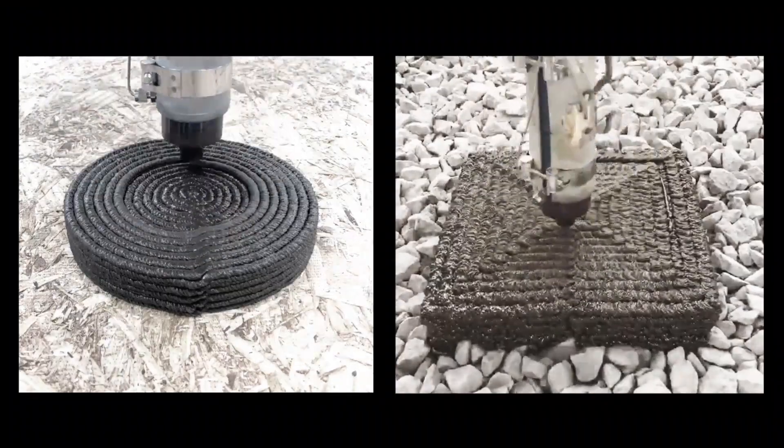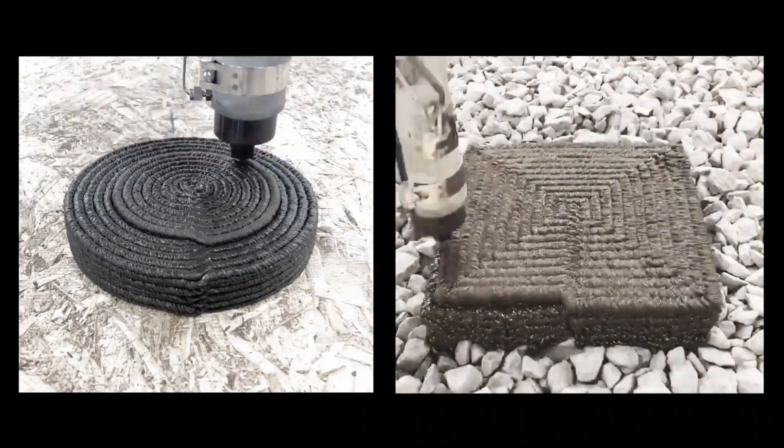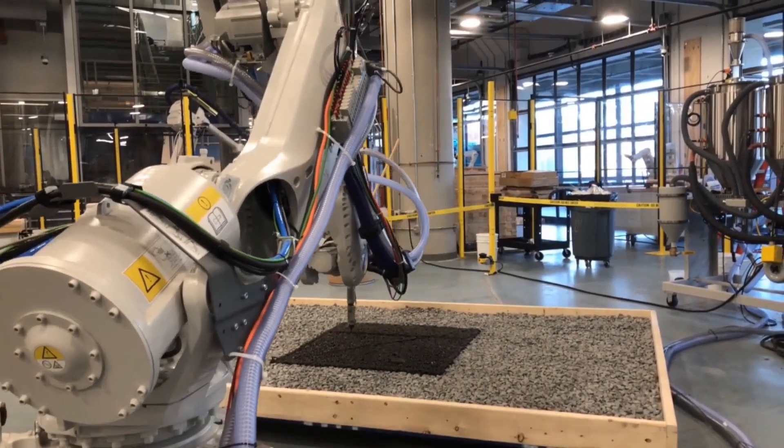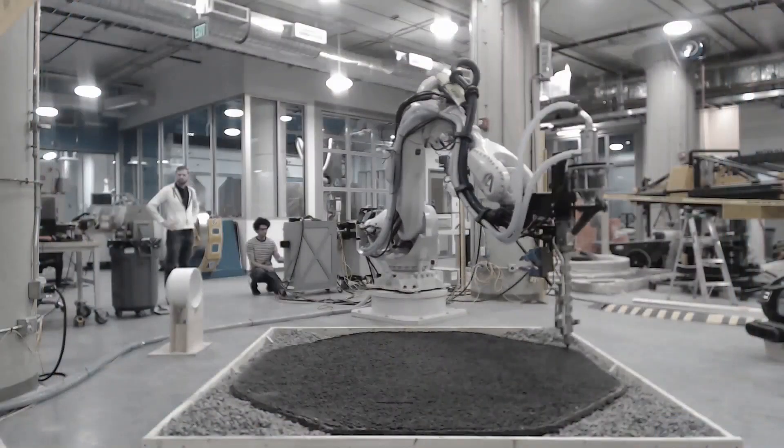In just five weeks, AI Space Factory progressed from isolated tests of our super-strong polymer to an autonomously printed large-area slab, our future habitat foundation subsequently validated by NASA.